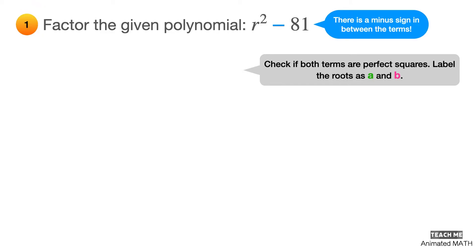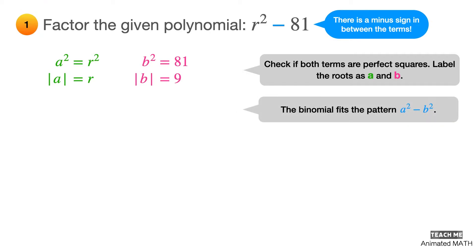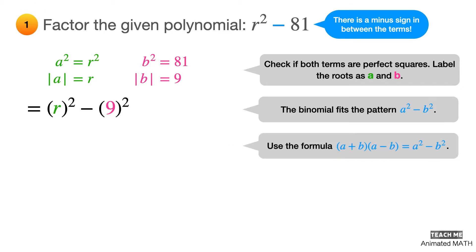Label the roots as a and b. Equate a squared to r squared — taking the square root of both sides gives a equal to r. Equate b squared to 81 — taking the square root of both sides gives b equal to 9. This binomial fits the difference of two squares pattern, a squared minus b squared, where a equals r and b equals 9. Factor using the formula (a + b)(a − b) and substitute: the final answer is (r + 9)(r − 9).